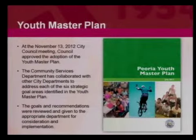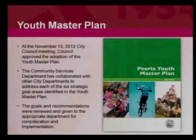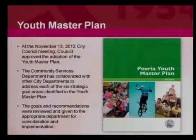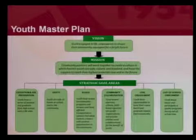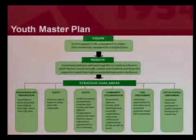Our next item is the youth master plan update and Peoria Community Council on Youth. You will recall that back in November of 2012 council adopted the Peoria Youth Master Plan. It was the first in the state, and there are several other municipalities keeping a close eye on what we're doing to engage our youth and plan for our youth and provide a great place to live and grow up. The community services department works hand in hand with many other city departments and external organizations to help execute the youth master plan. The goals and recommendations are under continuous review for potential improvement. We've got a strong vision, a strong mission, and six strategic goal areas.